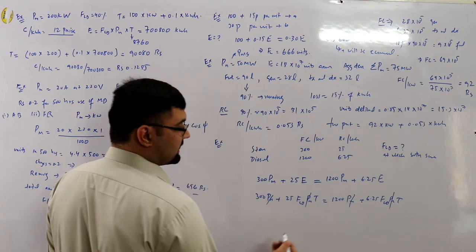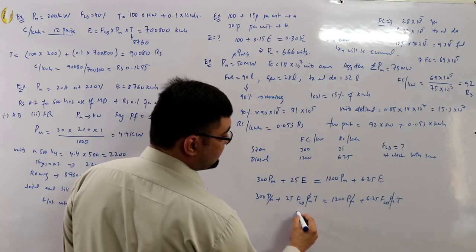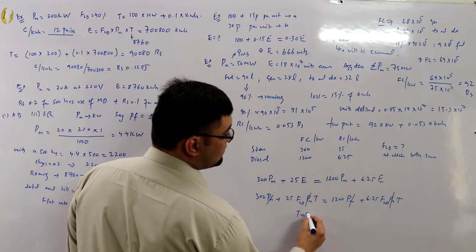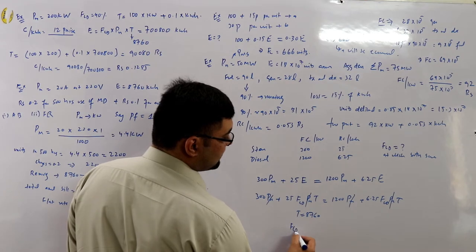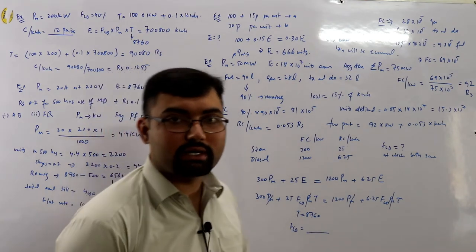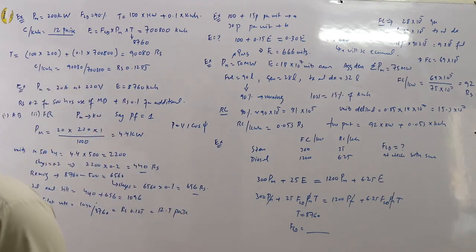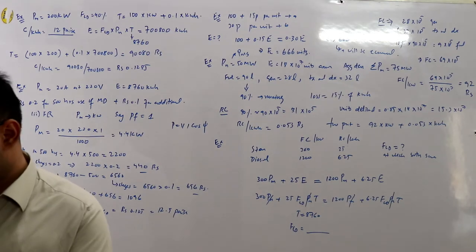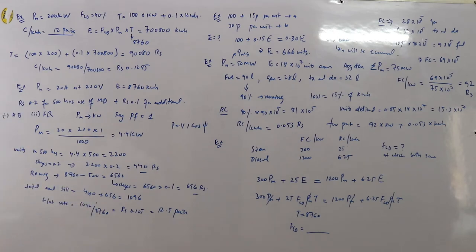Put T = 8760 hours and solve for the load factor. The book uses a lengthier approach, but this method is shorter. Only the load factor and time remain after cancellation.